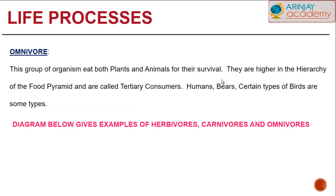Omnivores are a group of organisms that eat both plants and animals for their survival. They are higher in the hierarchy of the food pyramid and are called tertiary consumers. Humans, bears, and certain types of birds are some examples of omnivores.